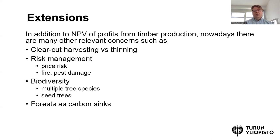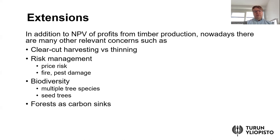It's also important to take into account various types of risks. The previous model assumes the forest is growing in a deterministic fashion. However, in addition to price risk, there is also the possibility of forest fire or pest damage. These are also related to climate change — the risk of forest fire and new pests is increasing. These can also influence the decision of when and how to harvest.